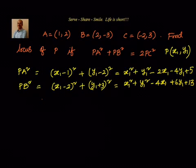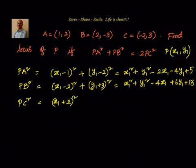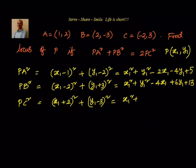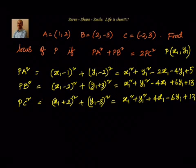Now let us find what PC square is. PC square: P is x1 comma y1 and C is minus 2 comma 3. So PC square equals x1 plus 2 whole square plus y1 minus 3 whole square, which equals x1 square plus y1 square plus 4x1 minus 6y1 plus 9 plus 4, giving us 13.